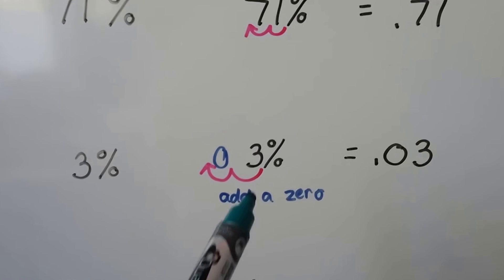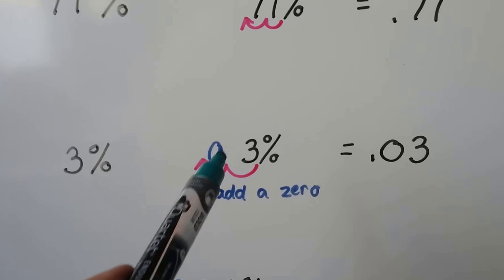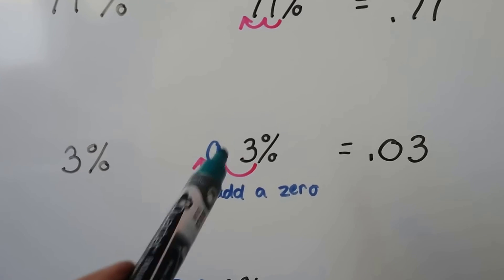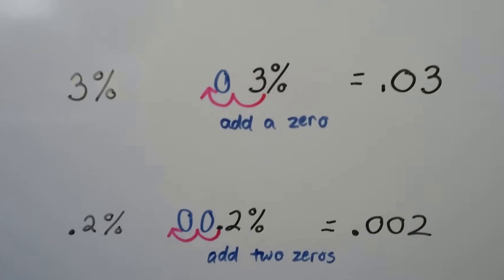Now we only have 3%. We start from the percentage sign and go one, two hops. That's going to leave an empty space that we need to add a zero as a placeholder, and we have 0.03. Three hundredths.